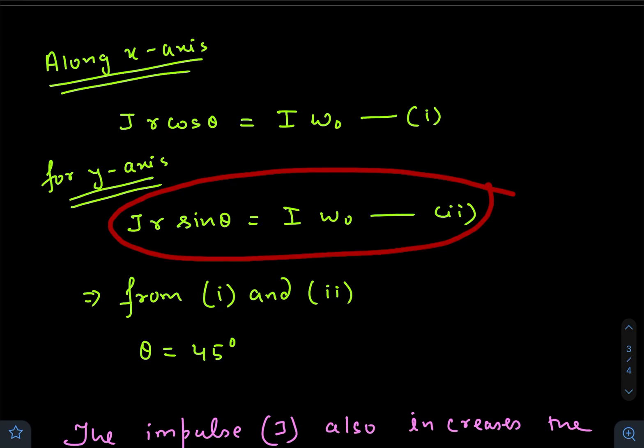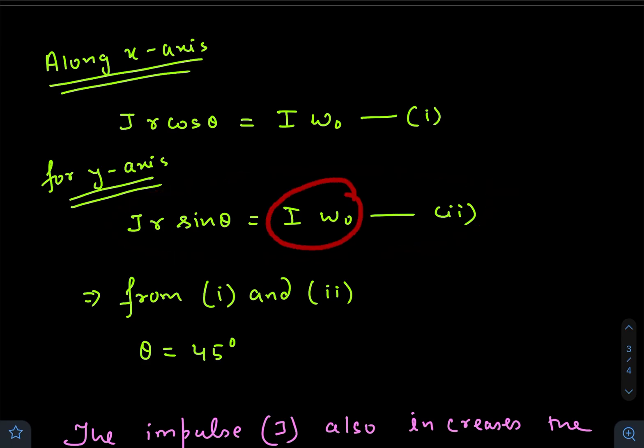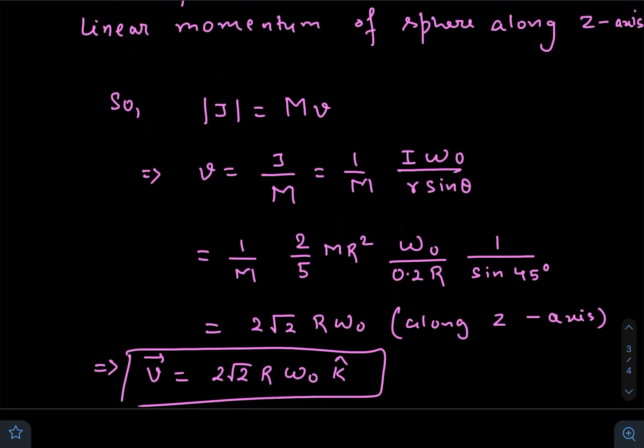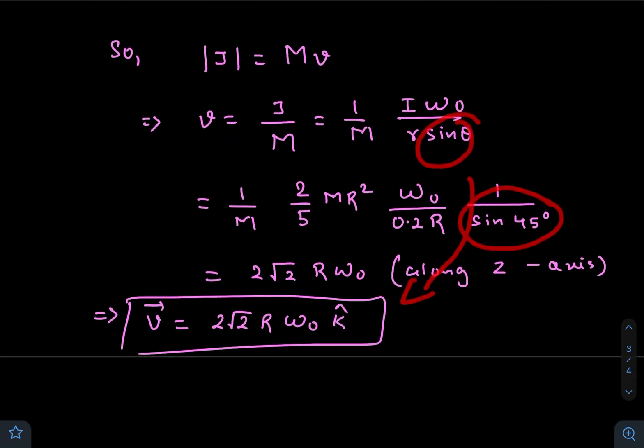J we can get from any one of these two equations. I took the second one, so J is I ω₀ divided by r sin θ. Just put the value of J here: I ω₀ divided by r sin θ. I is (2/5)MR², smaller r is 0.2 capital R, already given in the question, θ is 45 degrees. Just put the values - you get the velocity of the center of mass just after collision, and the direction is along positive z, so I have placed here k-cap.